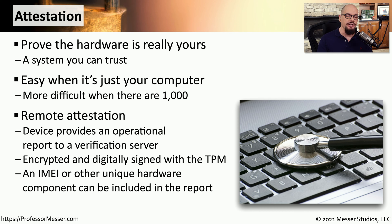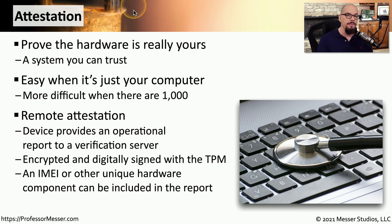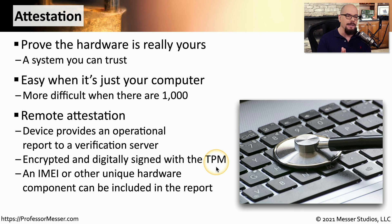With remote attestation, we have checks that occur on that remote device, and that device will provide a report to a verification server that will then allow or prevent access to the network. This attestation report is usually encrypted and digitally signed using keys that are located on the trusted platform module of that remote device. This report might also include a unique identifier for that hardware, such as an International Mobile Equipment Identity Number, or IMEI. By going through this attestation process, we can be assured that the device on the other end of this communications path is trusted and allowed access to our network.